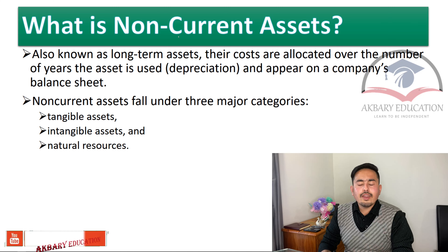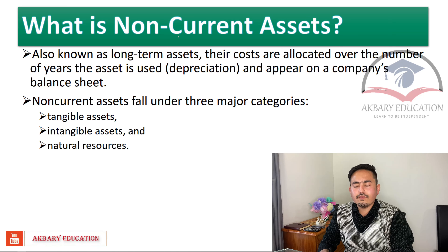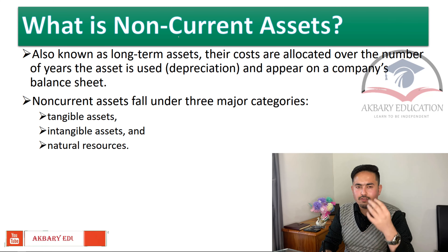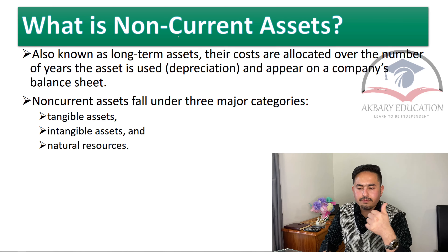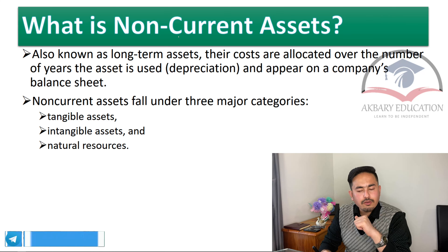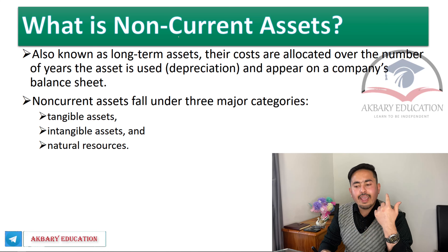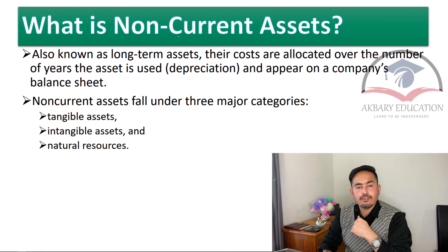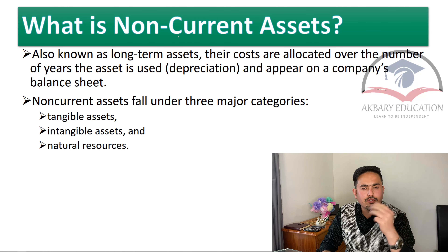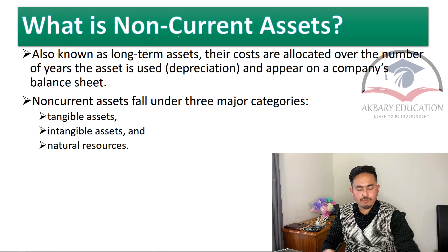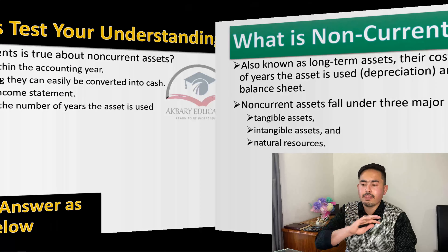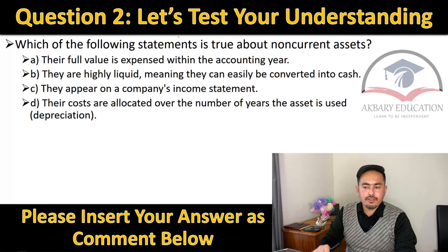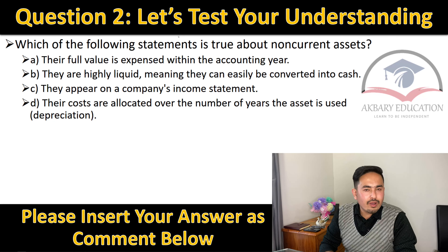Non-current assets fall under three major categories: tangible assets, intangible assets, and natural resources. We will go ahead with the full explanation about that, but up to the area you have studied and learned from these slides, please provide your response in the comments.